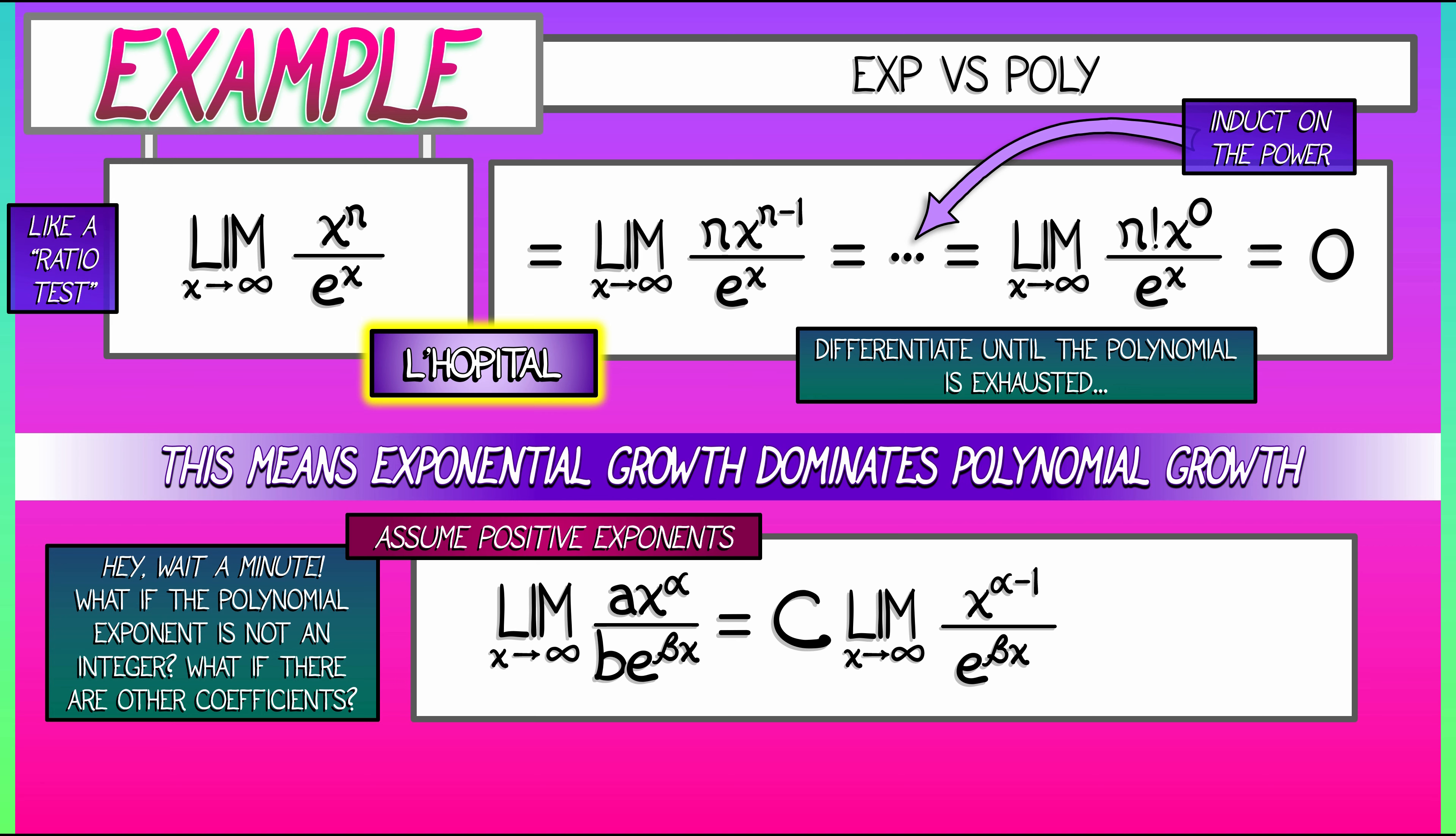What we notice is that the denominator has not changed. It's still e to the beta x. The numerator has had its exponent decrease by one. That means we can use this same inductive approach of exhausting the numerator until, after the right amount of derivatives, we get a numerator that is either a constant or something that is going to zero. As x goes to infinity, that means our answer, again, is zero. Exponential growth always, always dominates polynomial growth.